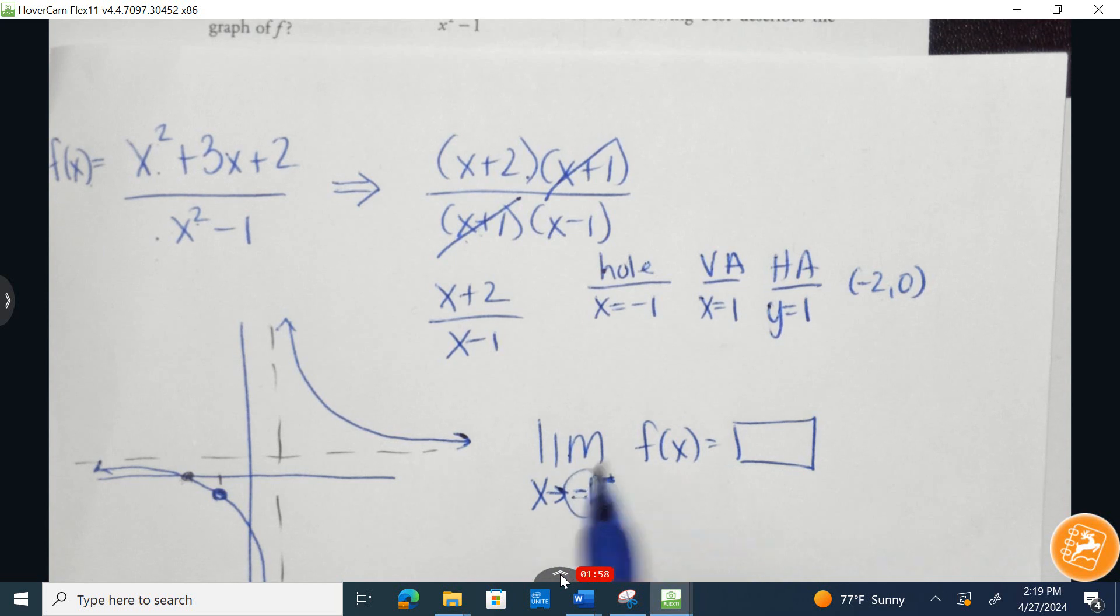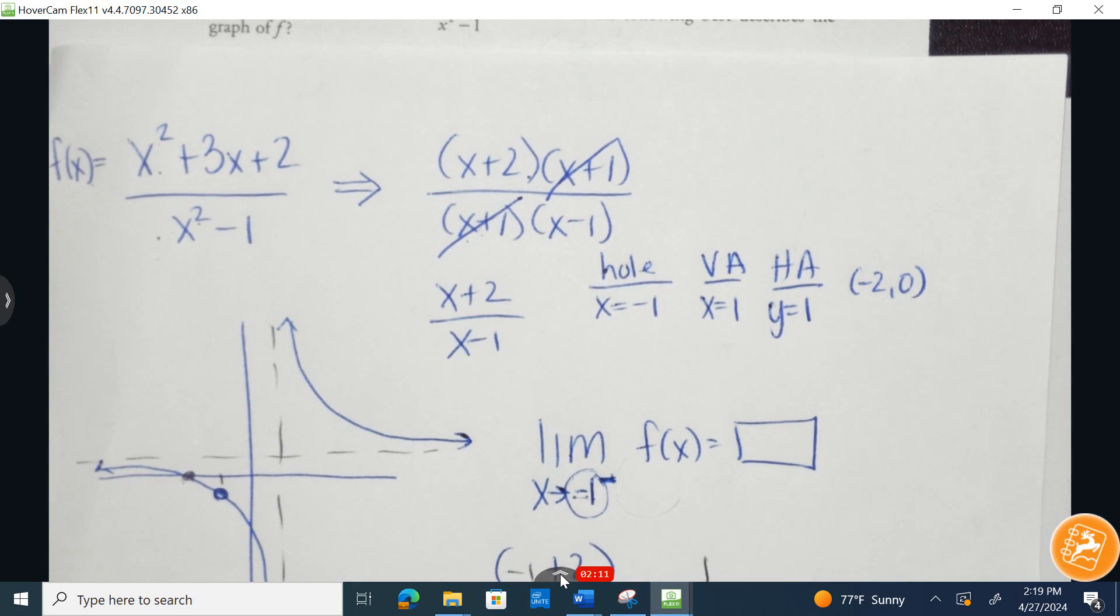Take this value and plug it into the simplified function. So I had x plus 2 over x minus 1, and I'm going to substitute in a negative 1. Negative 1 plus 2 is 1, and negative 1 minus 1 is negative 2.